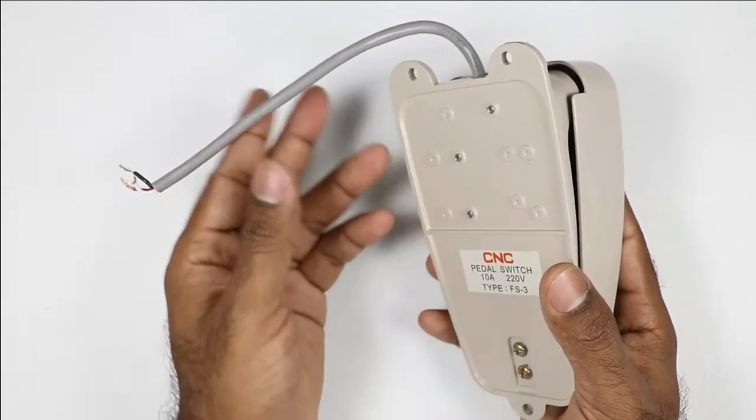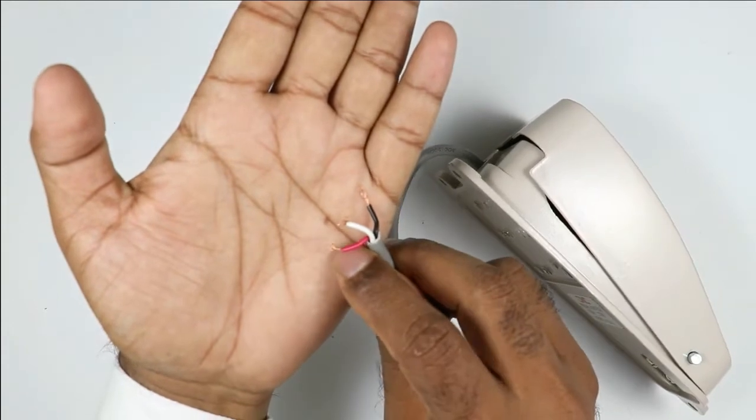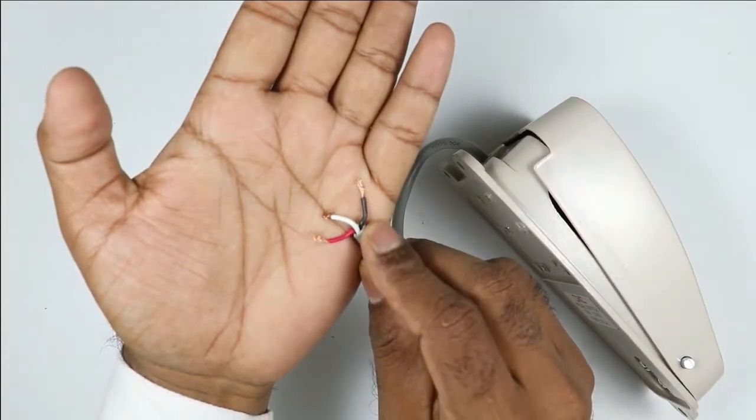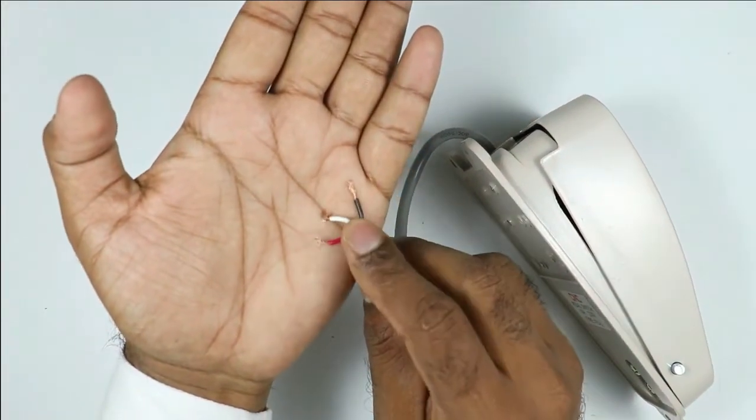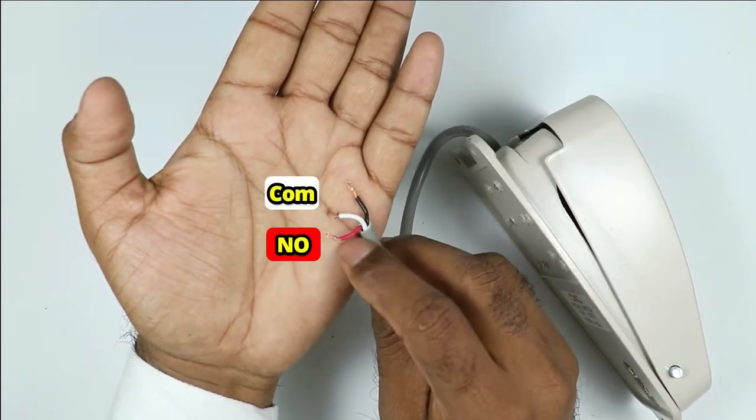Before connection, have a look at these wires. As you can see, there are three wires: red wire, white wire, and black wire. Among these three, one wire is common, one is NO (normally open), and one is NC (normally closed).